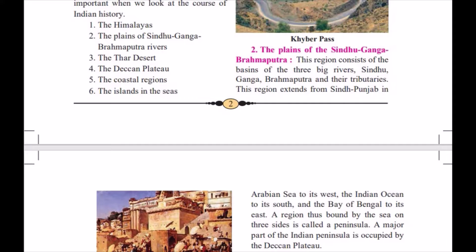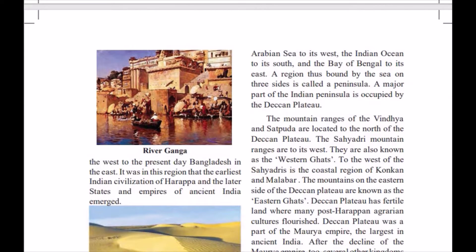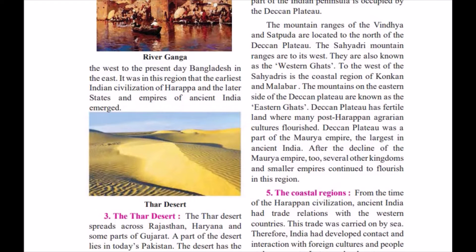Then we spoke about the plains of Sindhu, Ganga, and Brahmaputra — how the plain areas help human beings to cultivate and grow crops. Then we saw the Deccan Plateau, the Western Ghats and Eastern Ghats, and how various empires were established in these regions. I gave the example of the Mauryan Empire.